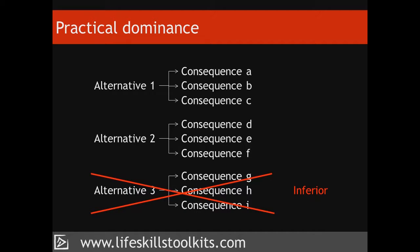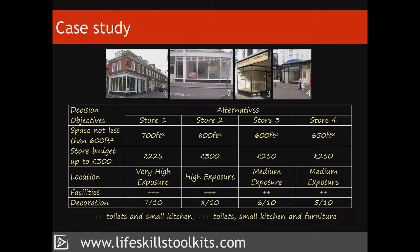The first way to reduce alternatives is to look for what is called practical dominance — where the consequences of one alternative are superior to, or dominate, the consequences of another. The way to do this is to compare alternatives in pairs. Reviewing her consequences table, Mizuki notices that the consequences of store 1 dominate those of store 3, because store 1 has a larger square footage, greater exposure to people passing by, more facilities, and is in a better state of decoration. Having eliminated store 3, Mizuki repeats the process again, this time comparing store 1 and store 4, and because of store 1's dominance, she can eliminate store 4 from her decision.